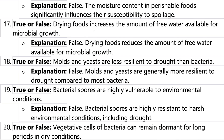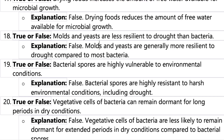Number seventeen: drying foods increases the amount of free water available — that's false, drying decreases free water. Number eighteen: mold and yeast are less resistant to drought than bacteria — this is also false, because mold and yeast are generally more resilient to drought compared to most bacteria; they can still survive in drought conditions.